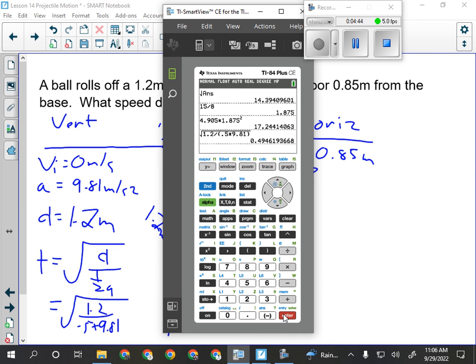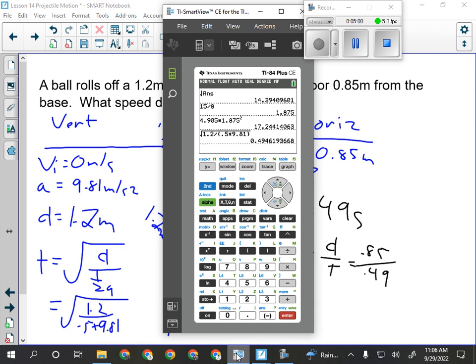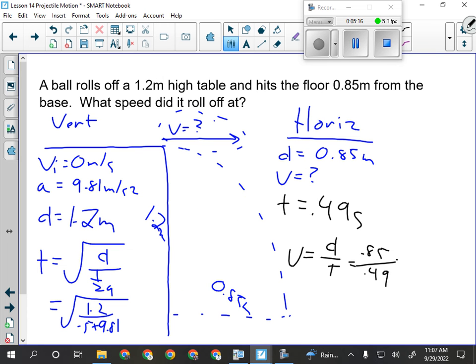So half a second, roughly. 0.49 seconds is the time it'll take to fall to the ground. So, I can transfer that over to here, 0.49 seconds, and then V equals D over T, 0.85 over 0.49. So it was moving at 1.7 meters per second horizontally when it rolled off the table. And we only have two significant digits here, so 1.7 would be our speed it rolled off the table.